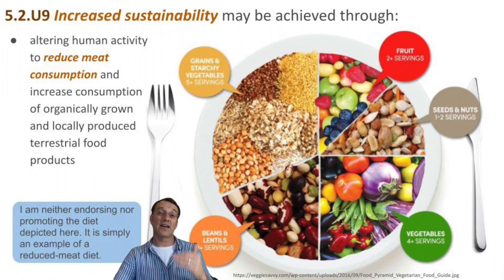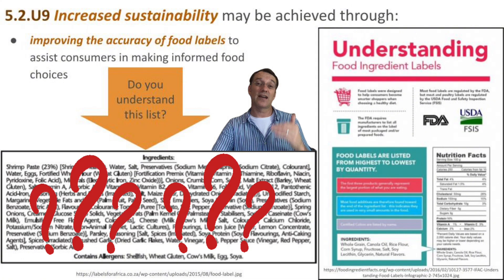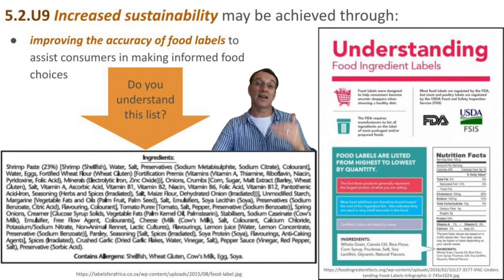One way to make our food system more sustainable is to change what we eat. Reducing meat consumption and eating more plant-based foods can make a big difference. Local and organic foods can also help by reducing transportation needs and chemical use. However, it's important to remember that there's no one-size-fits-all solution — the best diet depends on many factors including individual health needs and local food availability. Food labels can be a powerful tool for sustainability, helping consumers make informed choices to support more sustainable food systems.